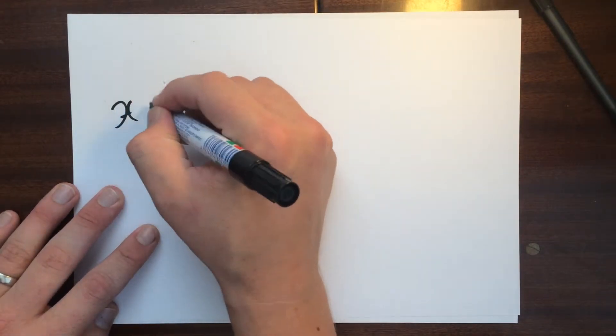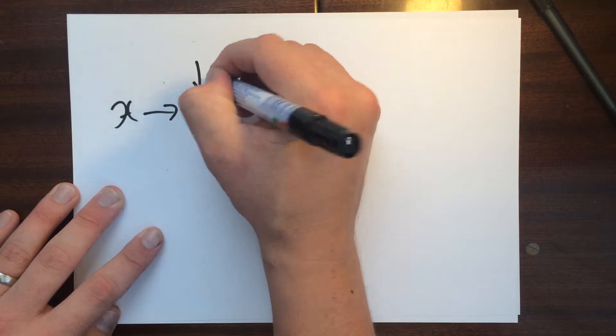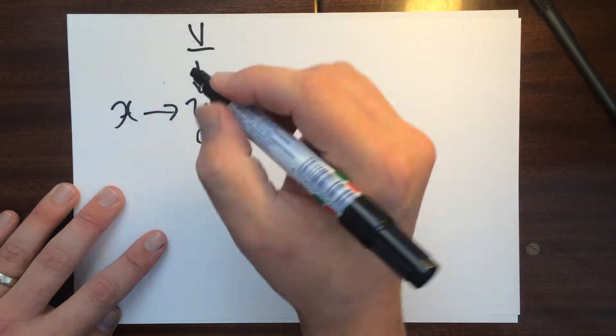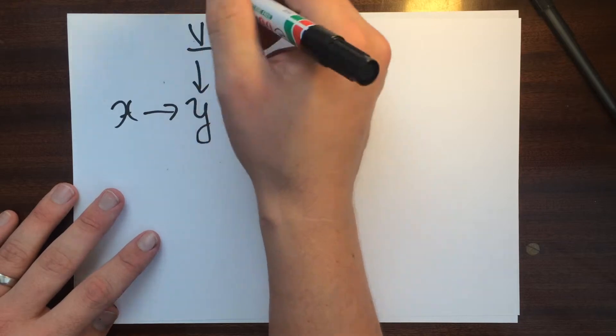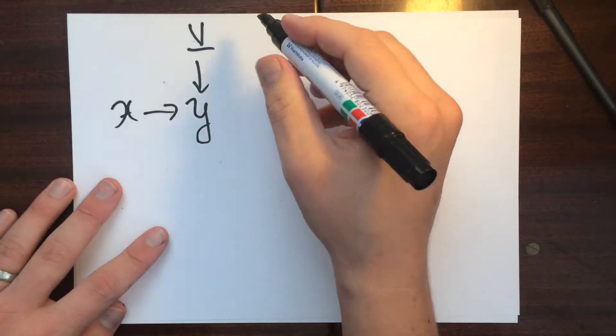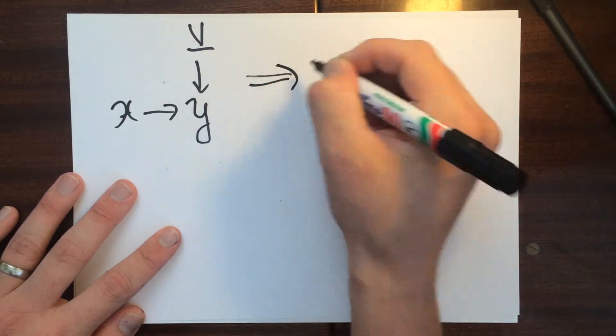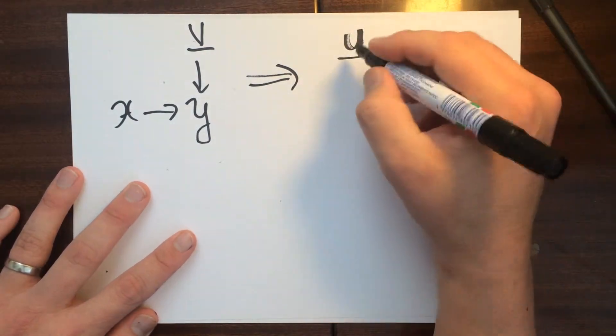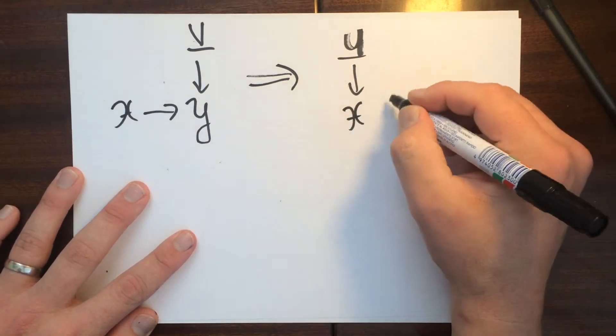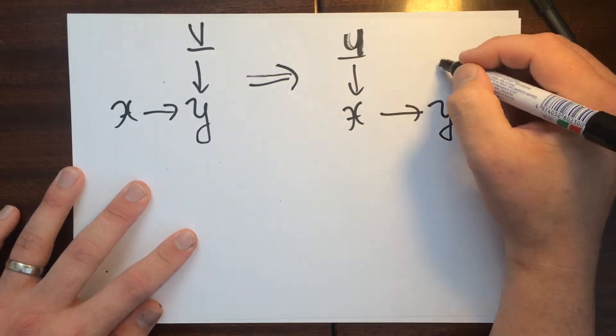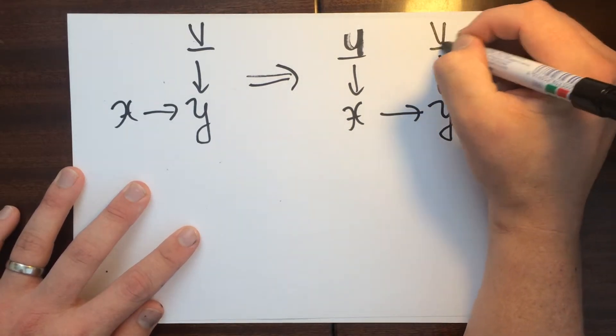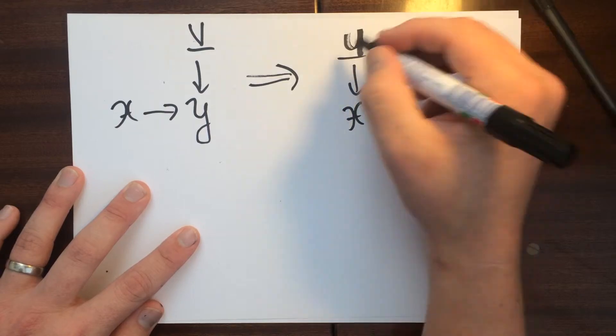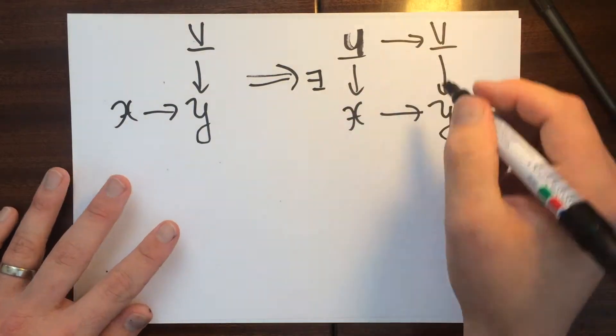So for every one of these, so I have this guy X to Y, and I can consider maps from something that comes from a geometric object. So for every one of these, what we're going to get is we're going to get this U, and we're going to get a map to X and a map to here, and we're going to get this diagram. So that there exists a U in a diagram like this.